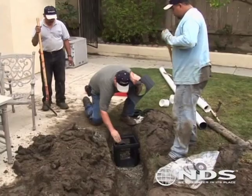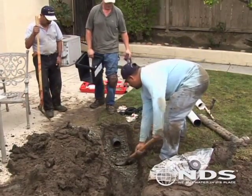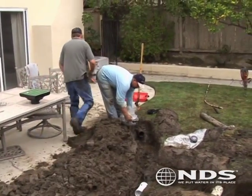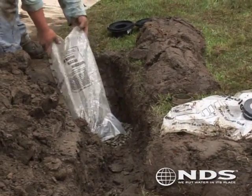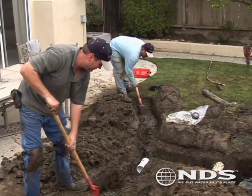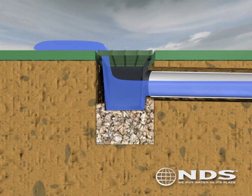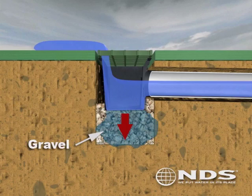For the catch basin, dig a hole with a depth equal to the height of the catch basin plus three to four inches. Drop in about three to four inches of crushed stone or gravel so that the top of the catch basin is level with the top surface of the landscape. Compacting the gravel will help reduce the settling of the basin. It is also important that the top of the basin be level with the landscape and that the bottom of the basin has sufficient gravel to leach the water trapped in the sump area.